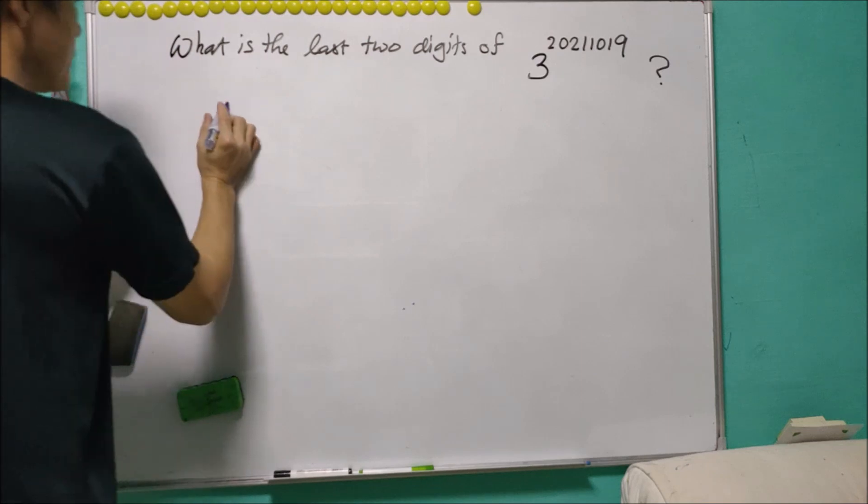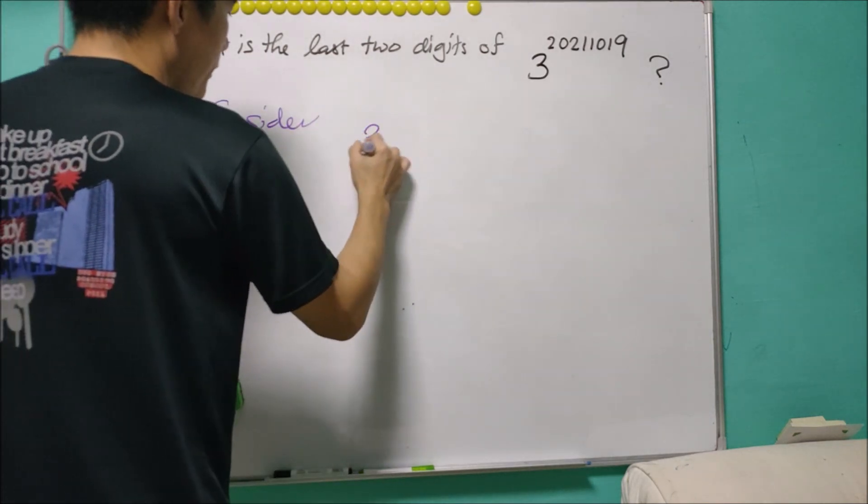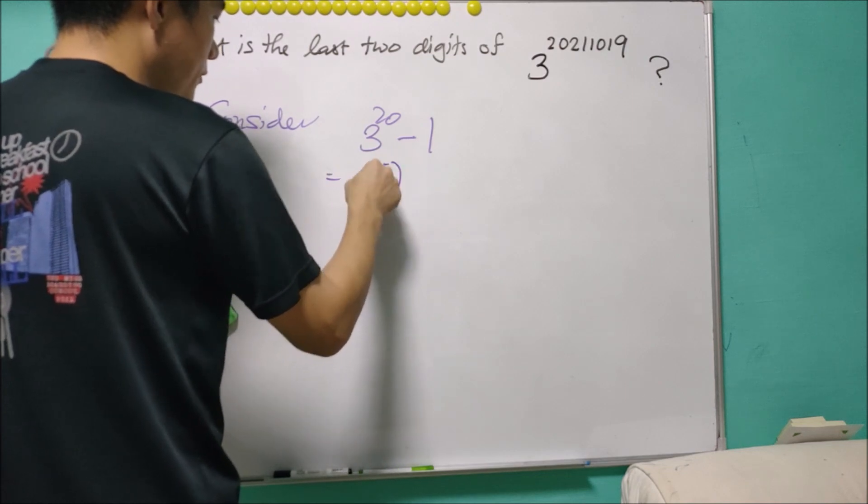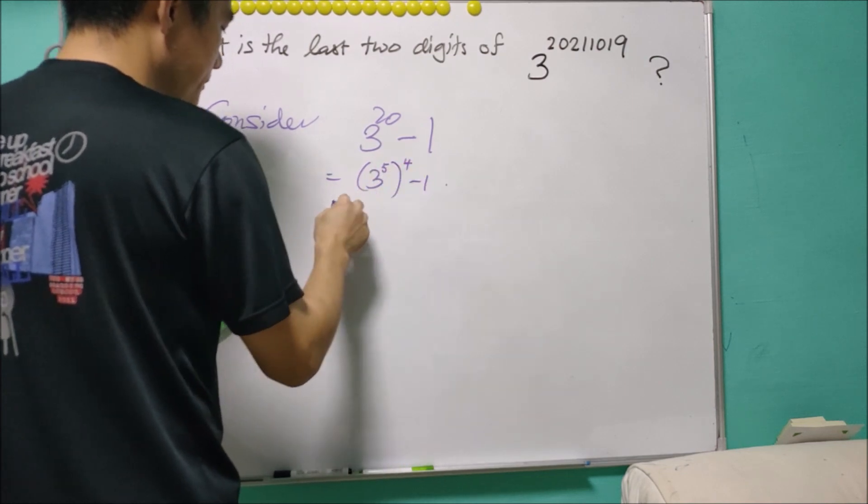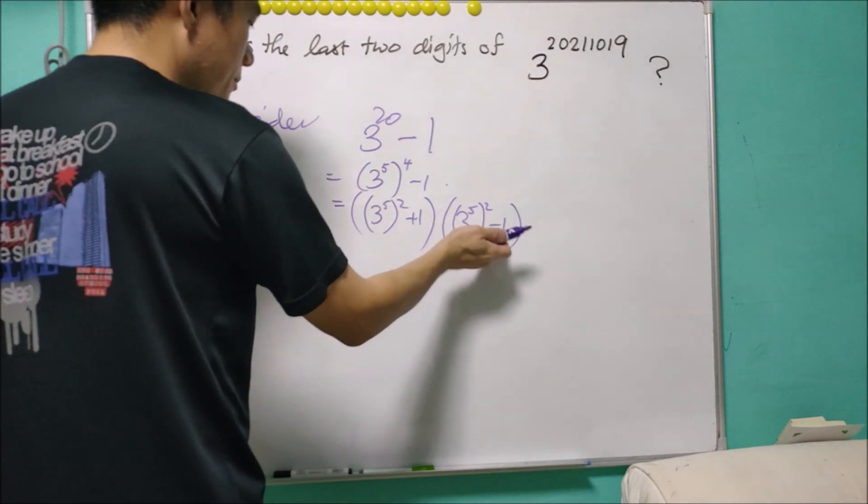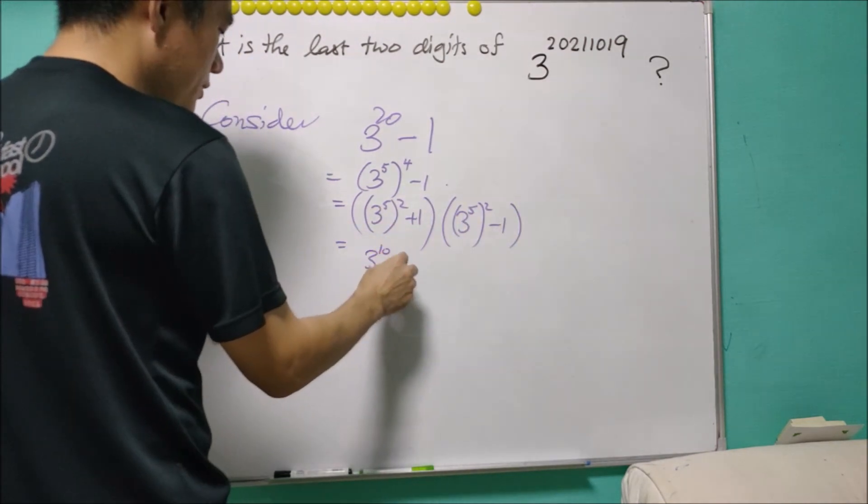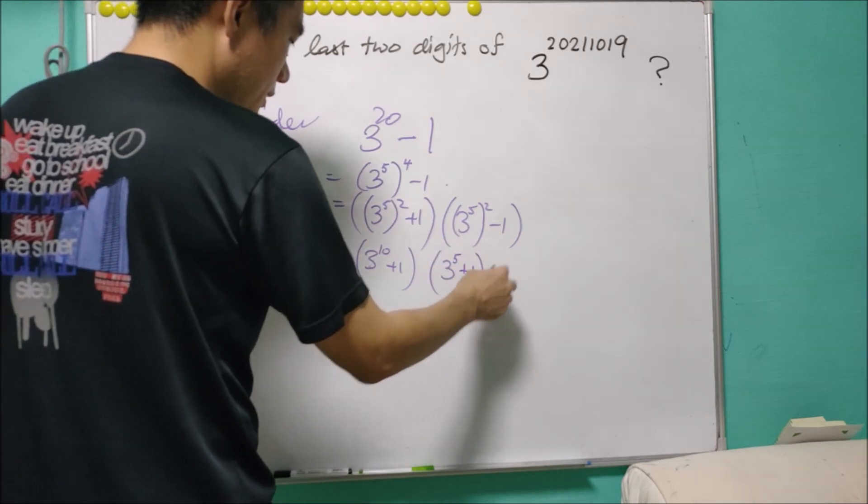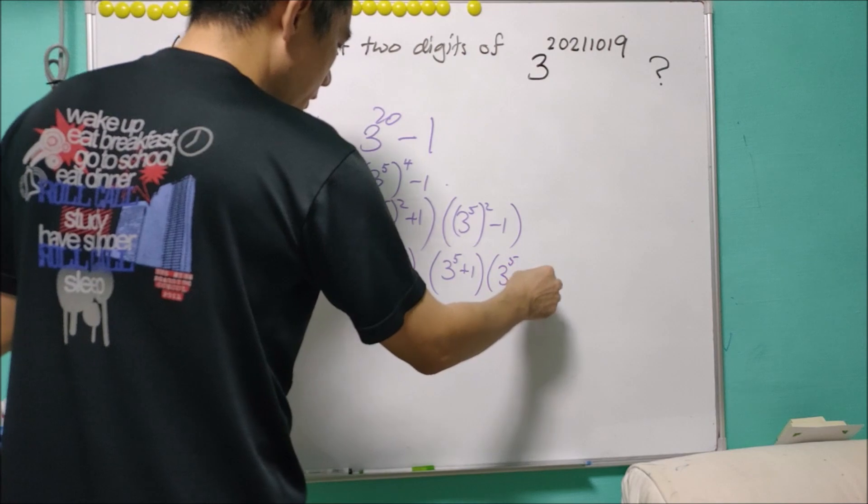So we can consider 3 to the power of 20 minus 1, which equals 3^5 to the power of 4 minus 1. This equals (3^5)^2 plus 1 times (3^5)^2 minus 1, which equals 3^10 plus 1 times 3^5 plus 1 times 3^5 minus 1.